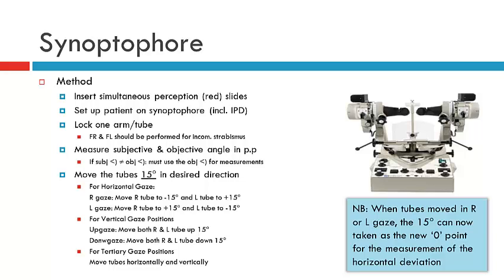When measuring a deviation we will use the principles that we learnt in concomitant strabismus last semester. To measure a deviation we use simultaneous perception slides and we can measure the deviation subjectively and objectively. You can fix the arms of the synoptophore so you can assess the patient fixing right and fixing left — the tube that you lock will be the fixing eye and you'll be measuring the deviation of the other eye.